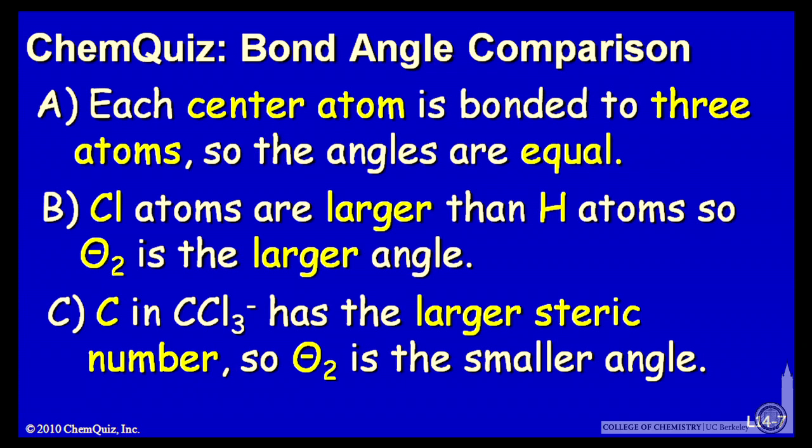Or C: the carbon in CCl3- has the larger steric number, so θ₂ is the smaller angle. Consider those possible explanations and make a selection.